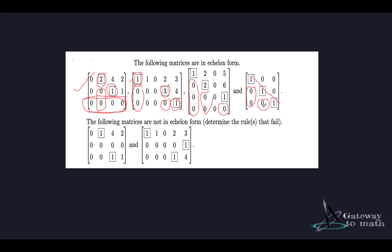Just as an intuition: when bringing a matrix in row echelon form, we're trying to bring it into an upper triangular state — non-zero entries on the upper right-hand side of the diagonal and zero entries on the lower left-hand side. But keep in mind that not all upper triangular matrices are in row echelon form. It's just an intuition that in most cases, bringing a matrix to upper triangular form moves toward row echelon form, but it's not a mandatory condition.